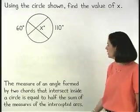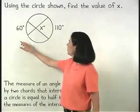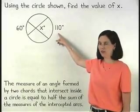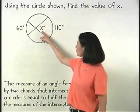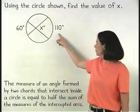In the diagram shown, since the measures of the intercepted arcs are 60 and 110 degrees, we can set up the equation x equals one-half times 60 plus 110.